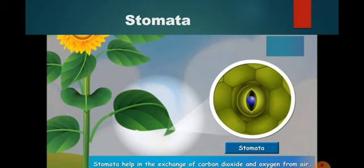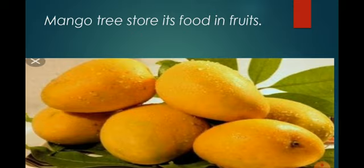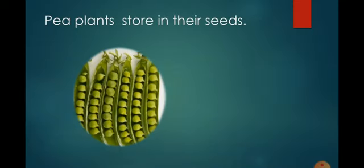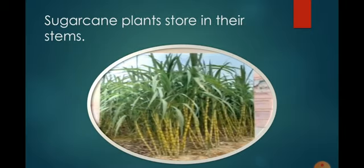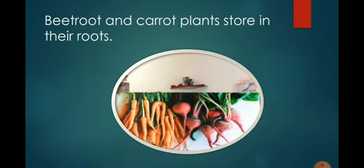Do you know students, after preparing food, the plants store extra food in different parts. For example, mango tree stores its food in fruits. Pea plants store in their seeds. Sugar cane plants store in their stem. Beetroot and carrot plants store in their roots. Cauliflower plants store in their flowers.